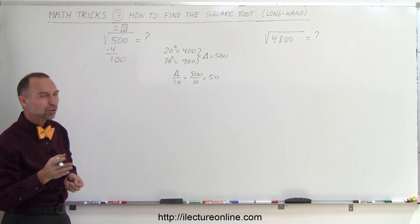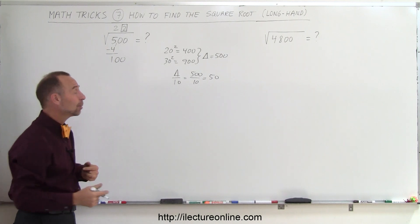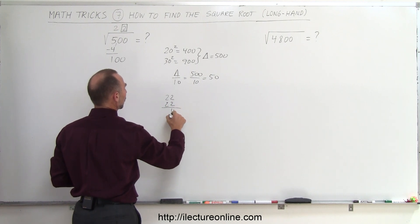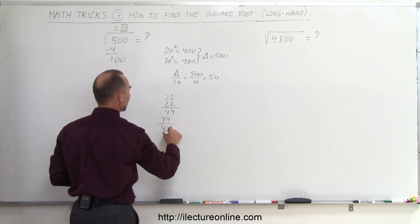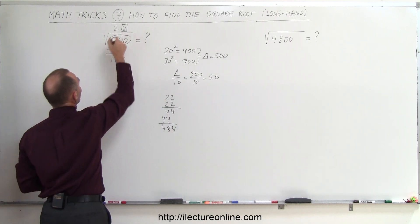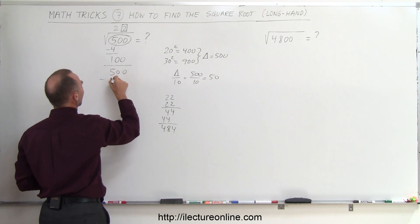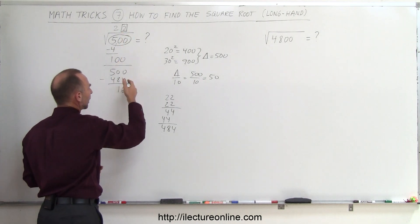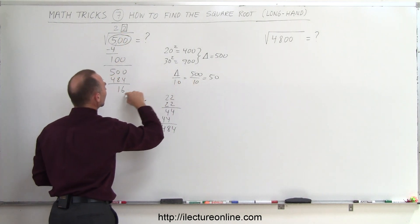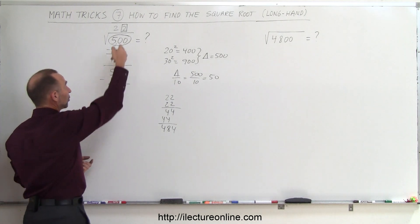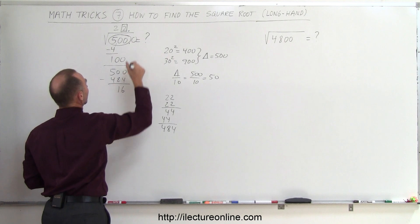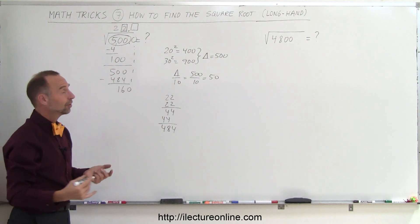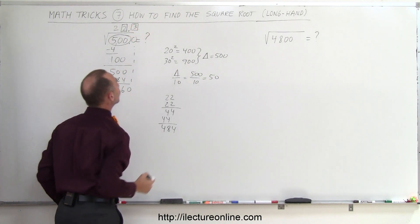To find out what the next decimal place is, I take what I have over here, 22, and I multiply that by itself. So I get 4 and 4, 4 and 4, that gives me 484. I take what I started with, 500, put that over here, subtract from that 484, and I'm left with 16. Now I want to drop the next number down in such a way that this number divided into that will give me somewhere between 1 and 10. If I drop a 0 down, and I have a decimal place here, so now I'm going to find the next number over here. I drop down the 0. 50 goes into 160 three times, so I know that the number is somewhere close to 22.3.